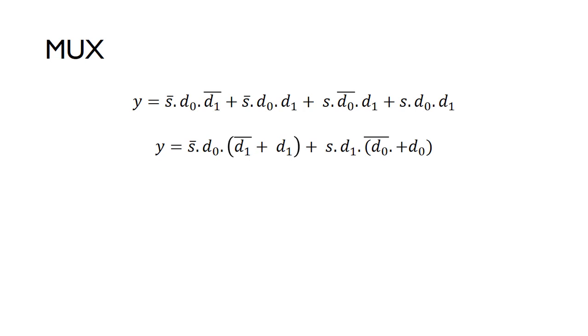Again, it's just a bit of looking for common factors. We can look at the first part here - we've got these two common factors: not S and D not. We can take that as a common factor, and we'll be left with this term in brackets. Inspecting the other two terms, we've got S and D1 as a common factor. We can take that as a common factor and we're left with these.